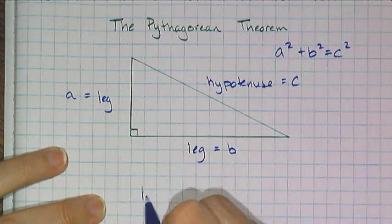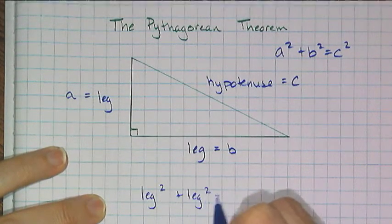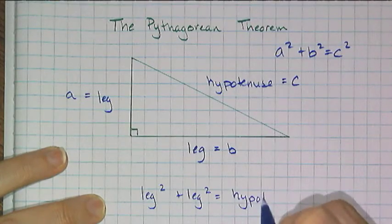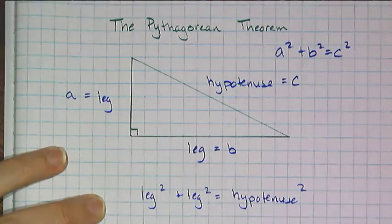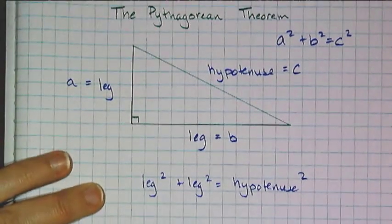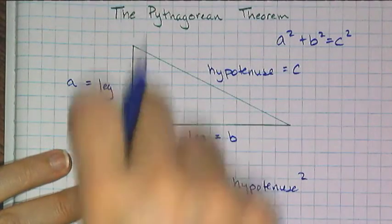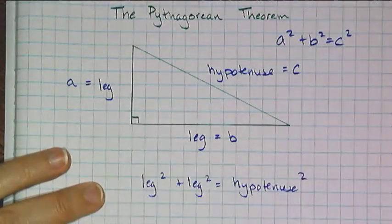But it's really leg squared plus leg squared equals hypotenuse squared. That's really what the Pythagorean Theorem says. And they're legs, right? So it's the length of the leg, length of the leg, length of the hypotenuse.